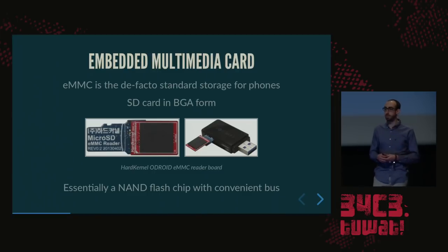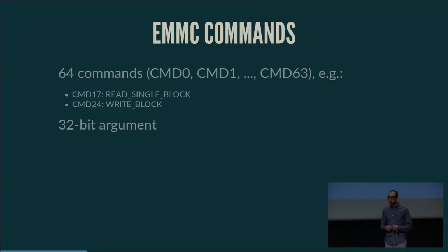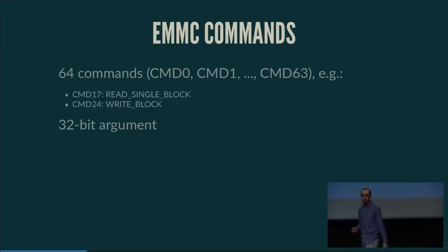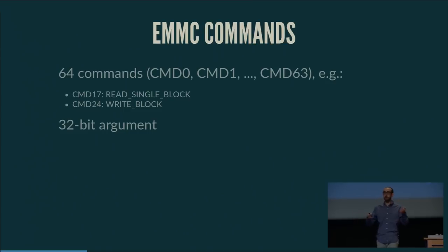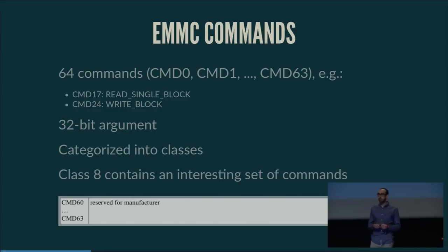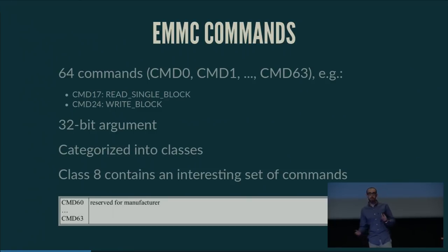When communicating with the eMMC bus, you send commands to the card. There are 64 commands, denoted CMD0 through CMD63. For example, CMD17 is 'read single block' and CMD24 is 'write blocks'. Each command takes a single 32-bit argument. Commands are categorized into classes; class 8 is particularly interesting because CMD60 through CMD63 are reserved for the manufacturer.